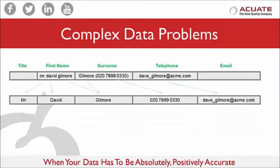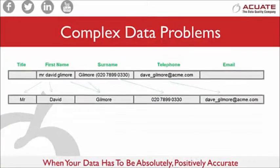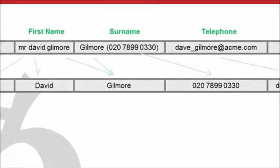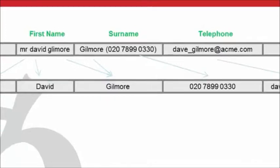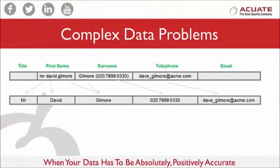Sometimes data problems can be really complex. In this example, the information is squashed into two or three fields. Quite complicated algorithms are needed to extract the data into the right fields.